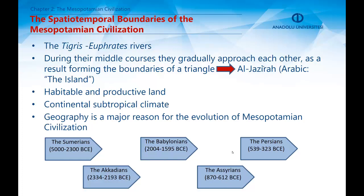Throughout this civilization, there were Sumerians, then the Akkadians, then the Babylonians, the Assyrians, and lastly the Persians — all evolved in this geographical area.